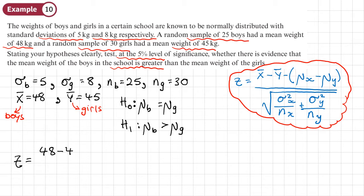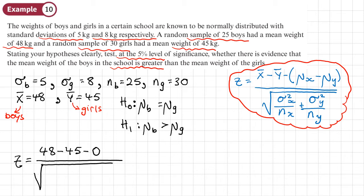Now we calculate Z: that's X-bar 48 minus Y-bar 45, minus zero — because under H0 the population means are assumed equal, so their difference is zero, and it will always be minus zero on the top. Divided by the square root of: variance of the boys (5 squared) over the boys' sample size (25), plus variance of the girls (8 squared) over the girls' sample size (30).